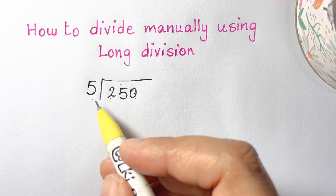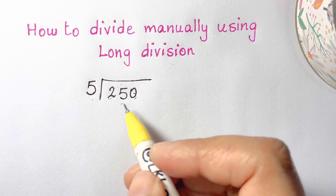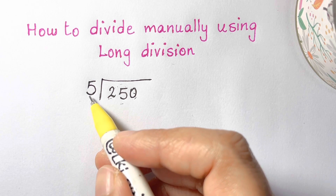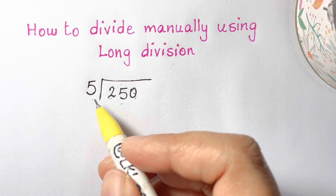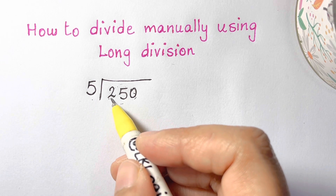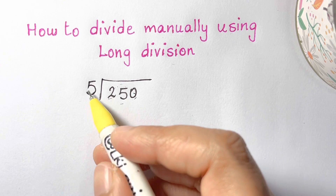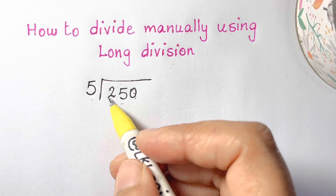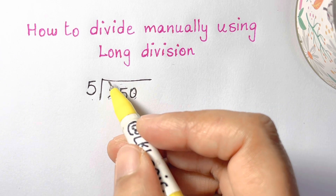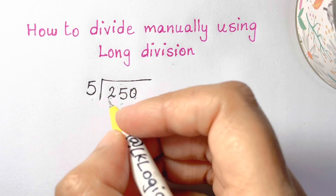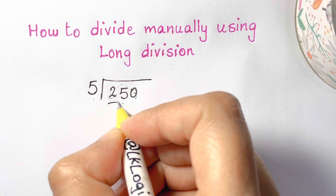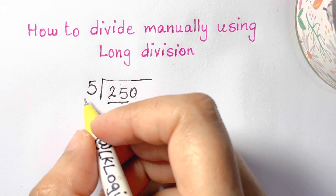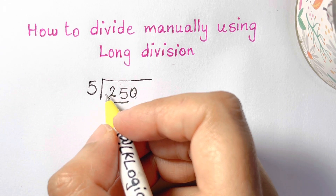Now, we always start by asking ourselves: does 5 go into the first number? Does 5 go into 2? No. So we don't put anything above 2. Now we include both numbers — 25. It doesn't go into the first number, so you start including the second digit.